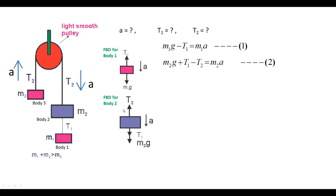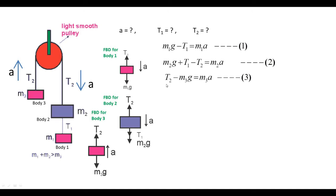For the free body diagram of body three: T2 acts upward and m3·g acts downward, with acceleration upward. Therefore T2 must be greater than m3·g, giving the equation: T2 minus m3·g equals m3·a. This is the third equation. We now have three equations to solve for a, T1, and T2.